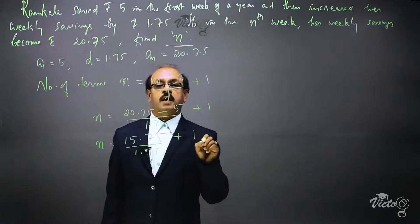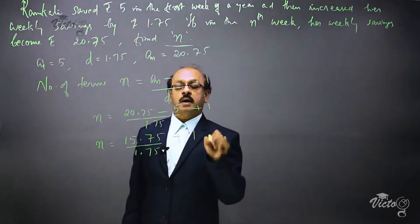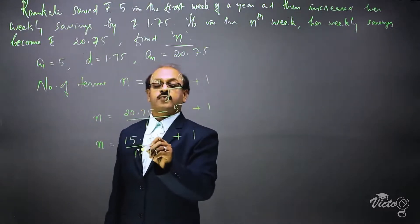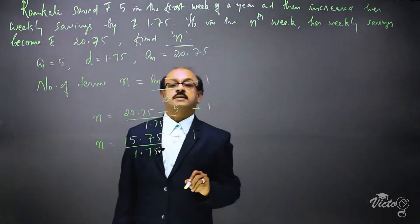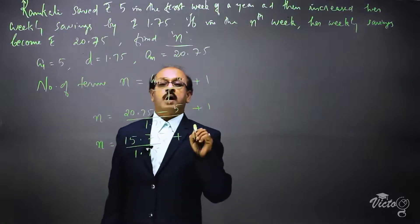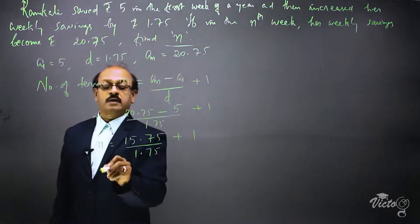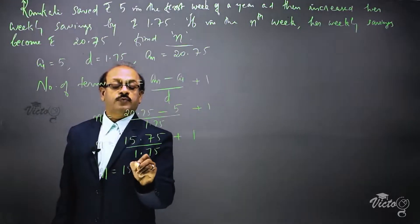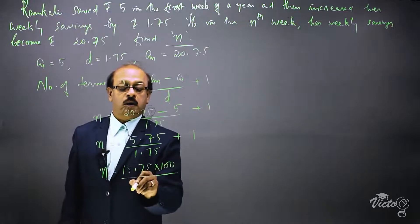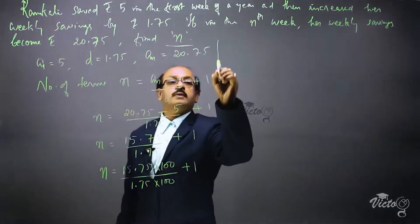Now we have to remove the decimals from both the numerator and denominator. Since there are two decimal places, we multiply both numerator and denominator by 100. So n = (15.75 × 100) / (1.75 × 100) + 1.